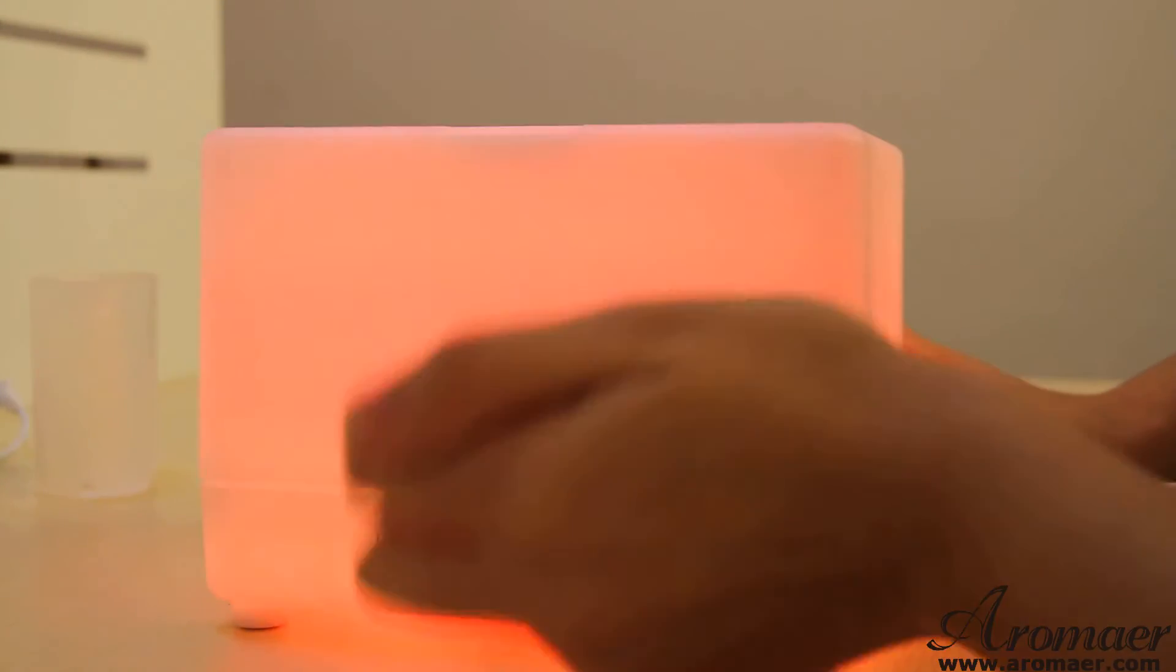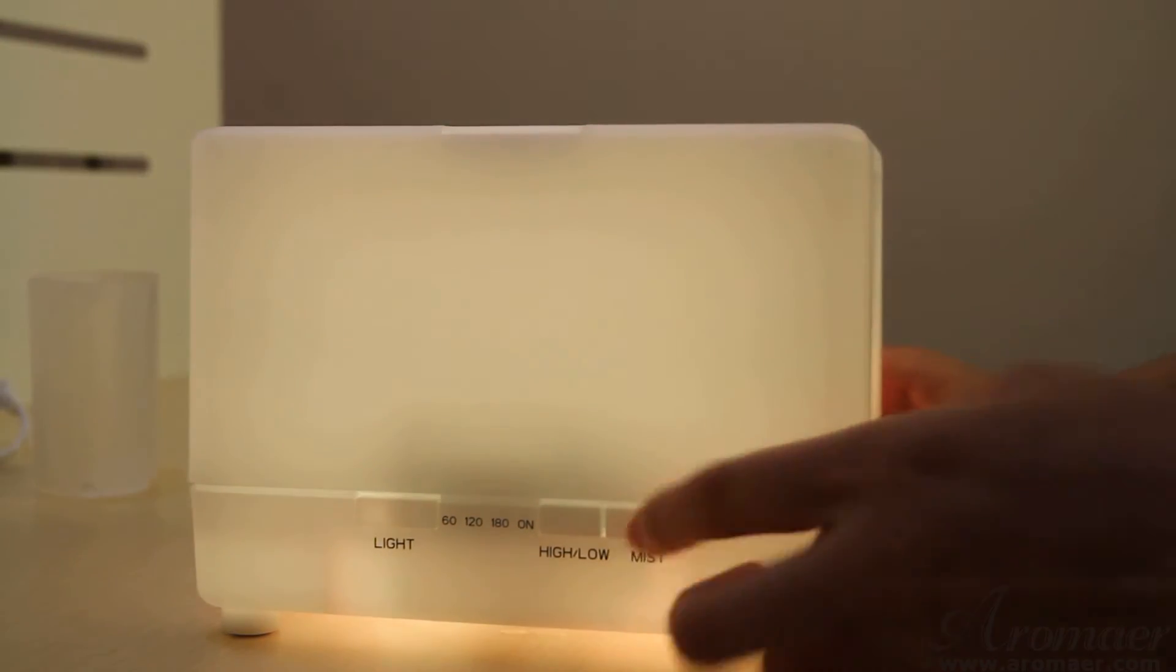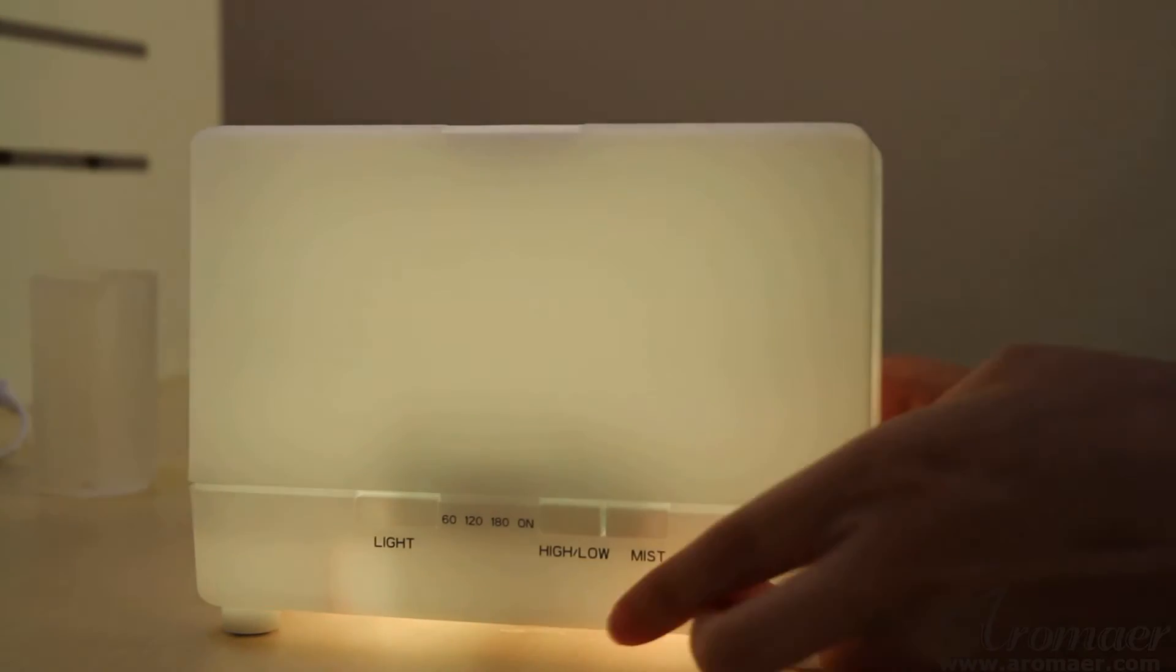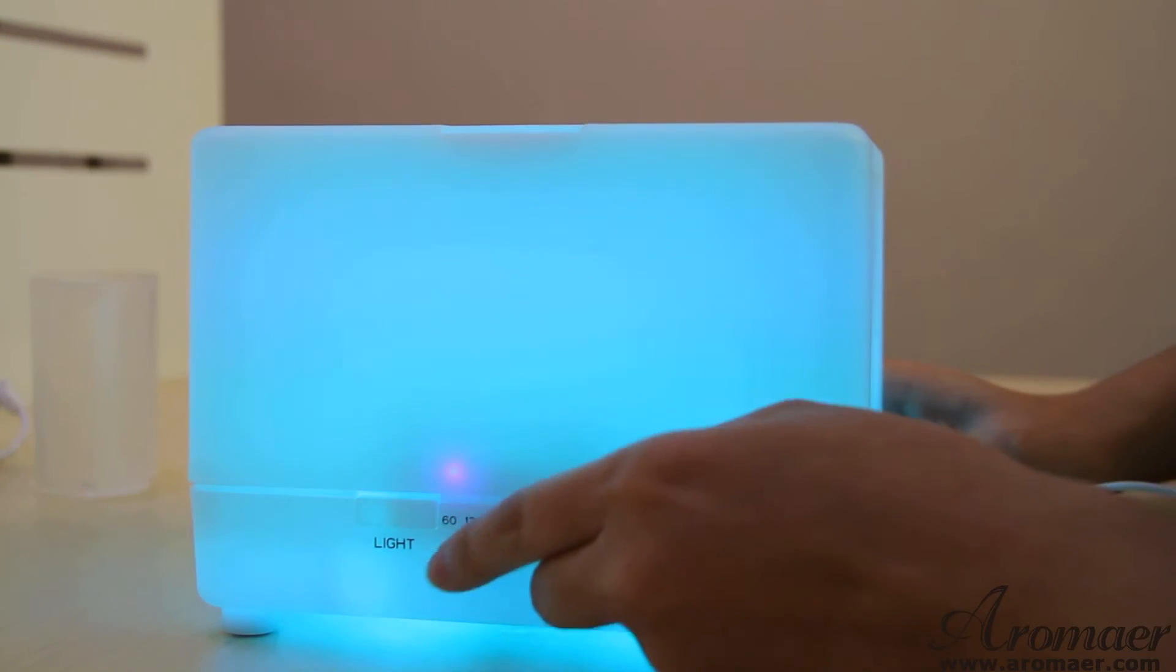And we just turn it on. And then we'll go to the mist button. If you want to turn on the mist, you need to press the mist button for 3 seconds. 1, 2, 3 until the light is on. And the mist starts coming out.